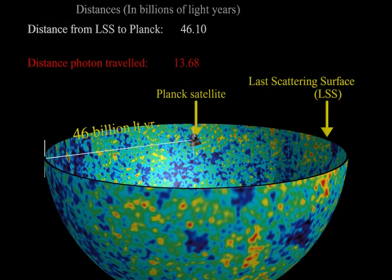Our photon was emitted when it was only 36 million light-years away from Planck. When the photon finally made it to Planck, it had traveled a grand total of 13.68 billion light-years. About 99.8% of this distance traveled was from space created between the photon and Planck by the expansion of the universe.